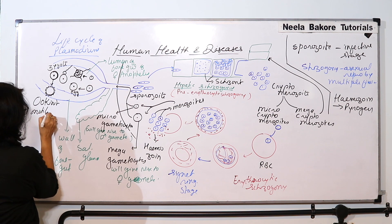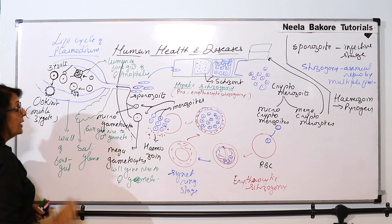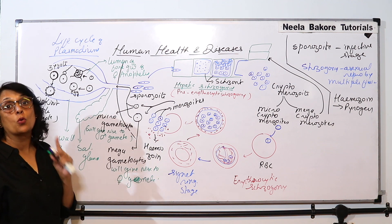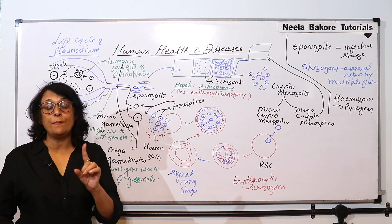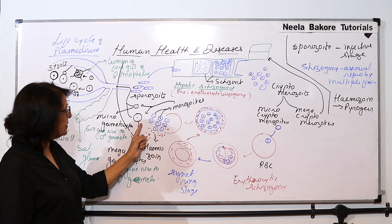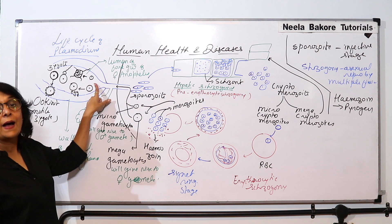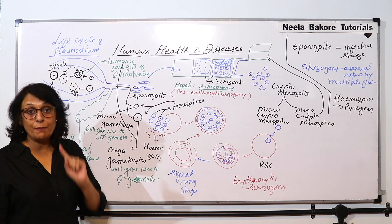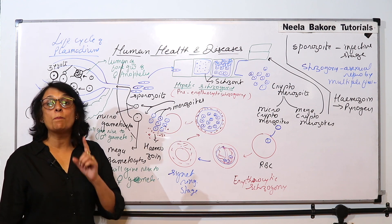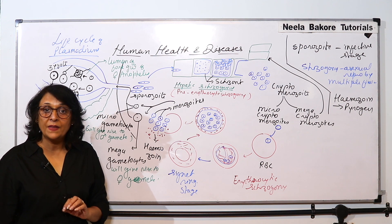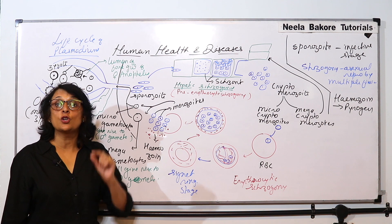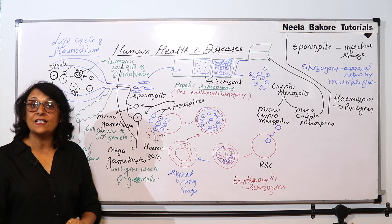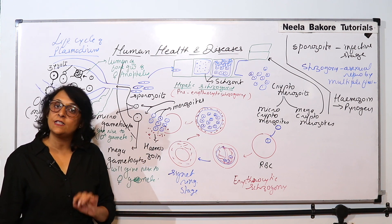That is the motile zygote. Now this zygote undergoes division — that is sporogony. Gamogony means formation of gametes and fertilization. Gamete-producing cells were produced in the human body and these cells are taken by the female Anopheles. In the body of female Anopheles, gametes are formed and fertilization takes place. That means the female Anopheles becomes the primary host — the host in which sexual reproduction of the parasite takes place. So gamete formation and fusion of gametes is taking place in the female Anopheles, making it the primary host.